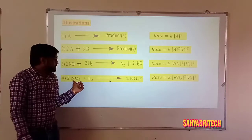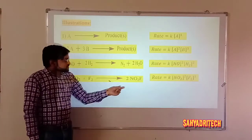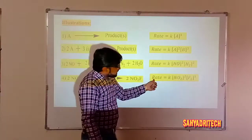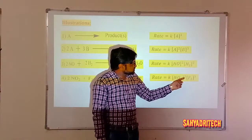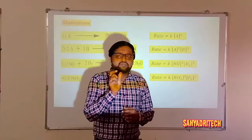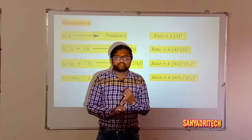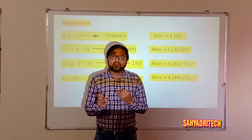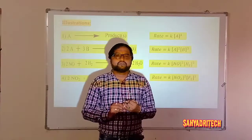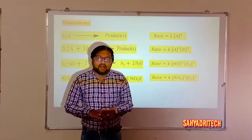One more example: 2NO₂ + F₂ → 2NO₂F — nitrogen dioxide plus fluorine gives rise to NO₂F. It is also a balanced equation. The rate is: rate = K[NO₂]²[F₂]¹. Key points while dealing with the Law of Mass Action: first, we must have a balanced chemical equation; then, rate equals the product of active masses of all reactant species raised to their respective stoichiometric coefficients.